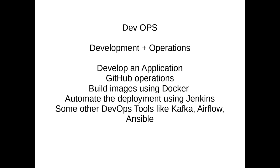What do we need to look at in this video series? First, we develop an application — two applications. The application code goes into Git. We look at Git operations, build an image in Docker, and in the fourth video we deploy Jenkins. We will also cover Kafka, Airflow, Ansible, and many other tools.